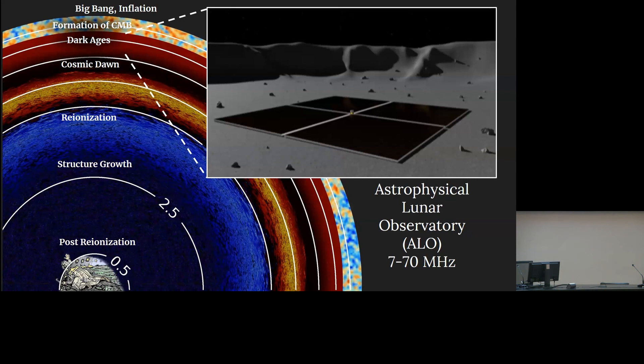Since it is expected that the signal of interest is going to peak at around 30 MHz and at 70 MHz for the periods of Dark Ages and Cosmic Dawn, respectively, ALO is planned to operate on a large bandwidth, approximately spanning from 7 to 70 MHz. And here I show you an artist's depiction of the full-scale ALO on the lunar surface.